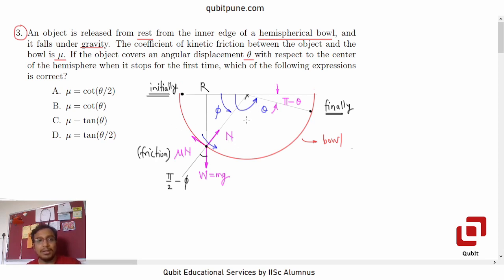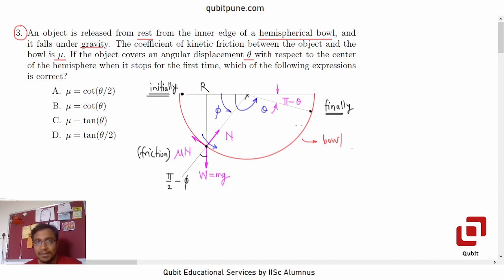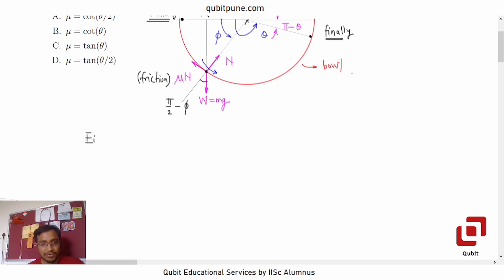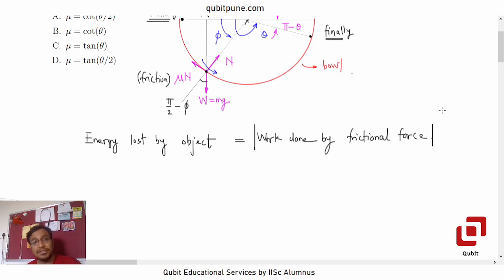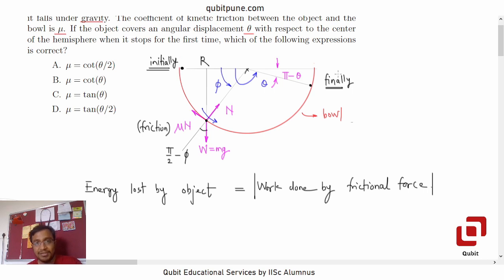Now, how can we determine the relationship between the angle theta and the coefficient of friction mu? We can do that using energy considerations. The energy that this object loses is basically converted into heat, and that is the work done by the frictional force. So we start with that equation: the energy lost by the object equals the magnitude of the work done by the frictional force. The energy lost by the object is the potential energy change between the initial position and the final position.